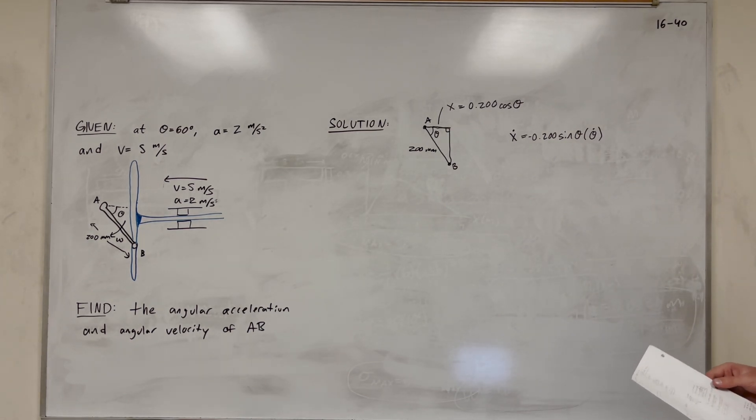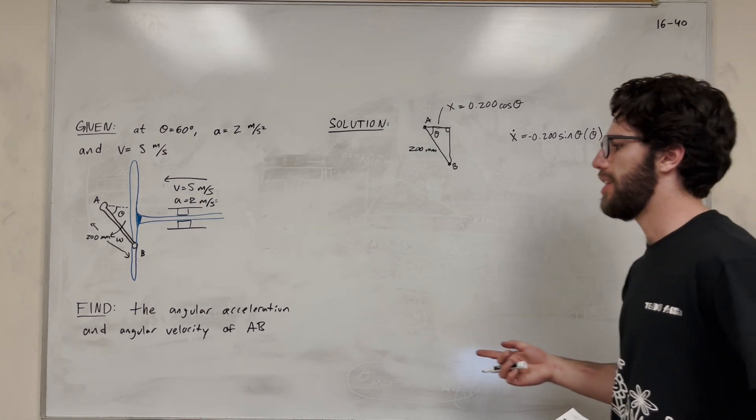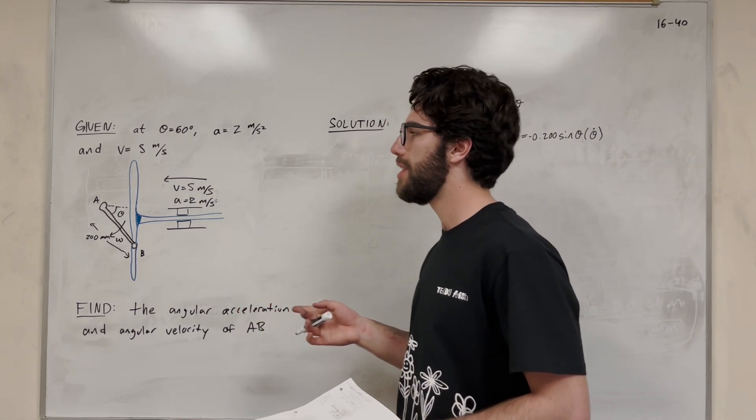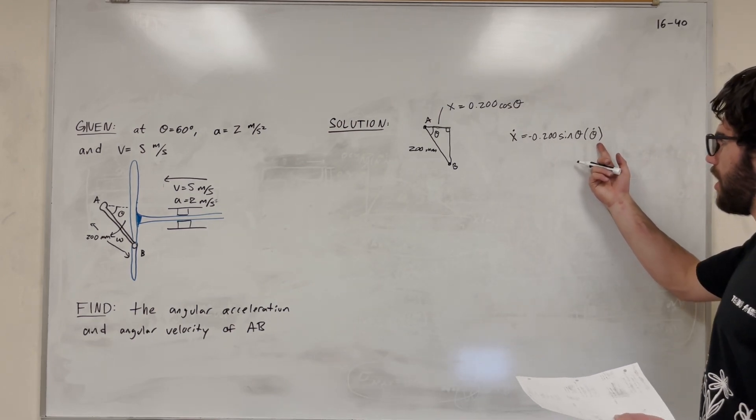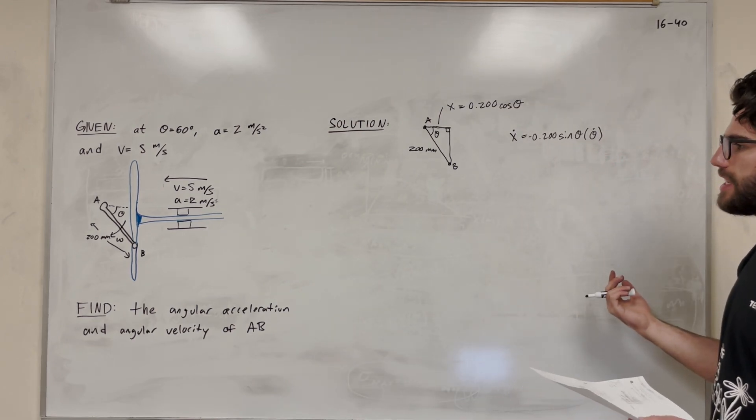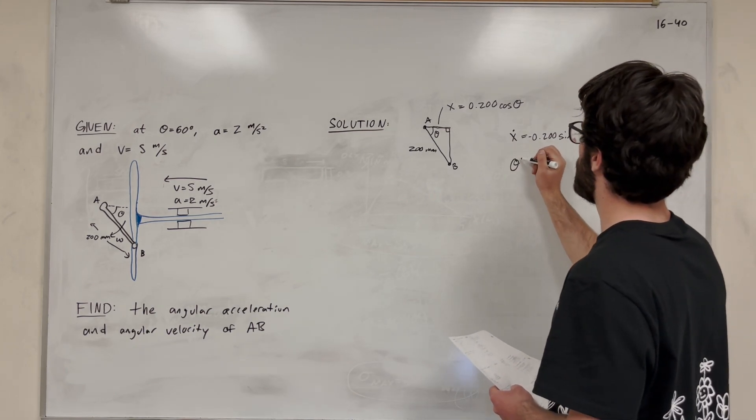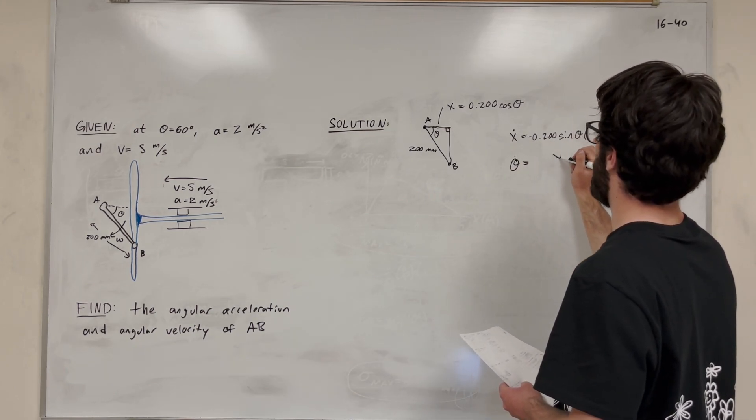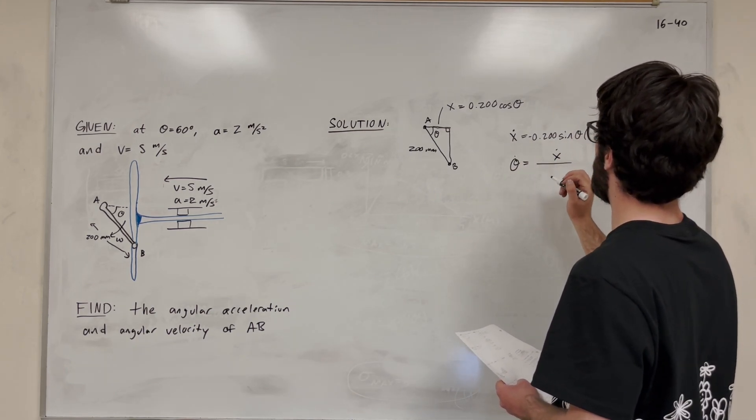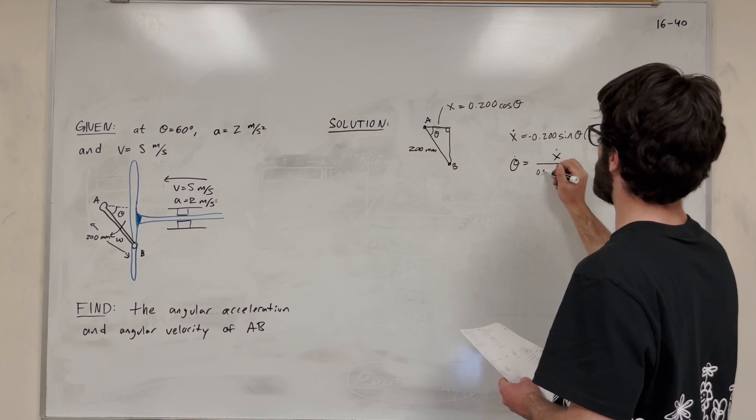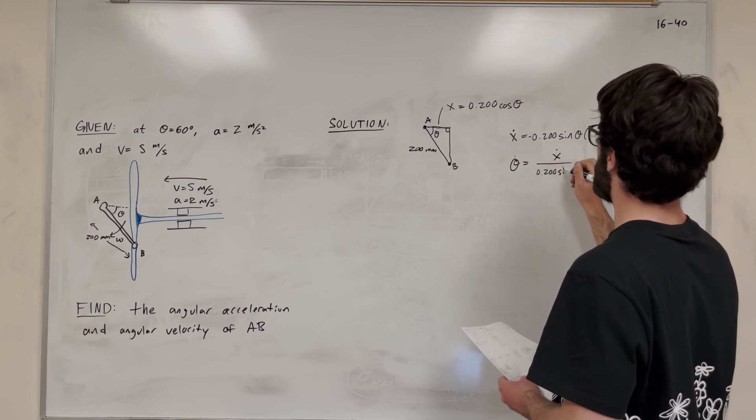All right, so then let's plug in our numbers. So what are we doing? Let's not plug in numbers yet. What are we trying to solve for? Angular velocity and angular acceleration. Well, what you'll notice is that theta dot, right? What is theta dot? Theta dot is angular acceleration. So let's rearrange this in terms of theta dot.